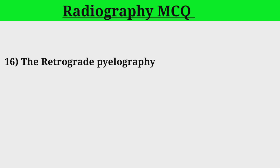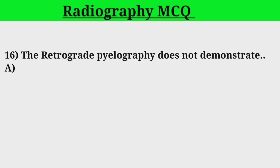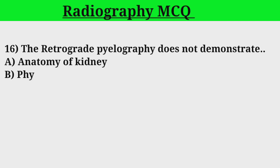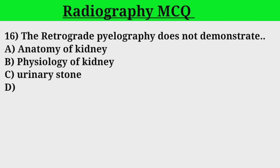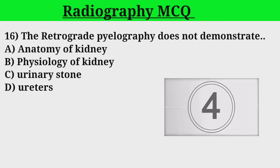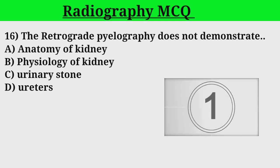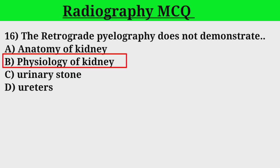Question 16. The retrograde pyelography does not demonstrate: A. Anatomy of kidney. B. Physiology of kidney. C. Urinary stone. D. Ureters. Correct answer: B.